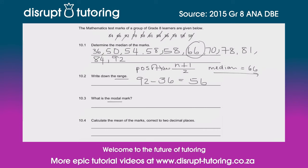The next one asks for the modal mark — another way of saying this is the mode. The mode is the one that happens the most, so remember: mode = most. Looking at our numbers, the only one that repeats itself is 58, so therefore 58 is our modal mark.